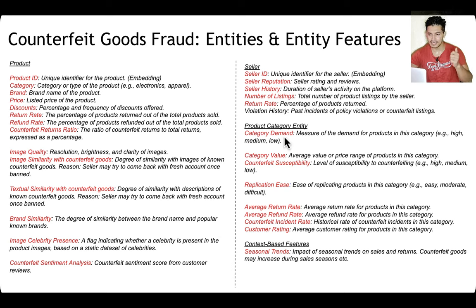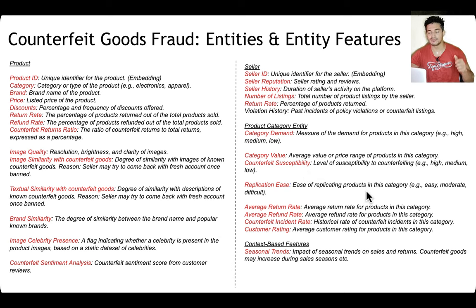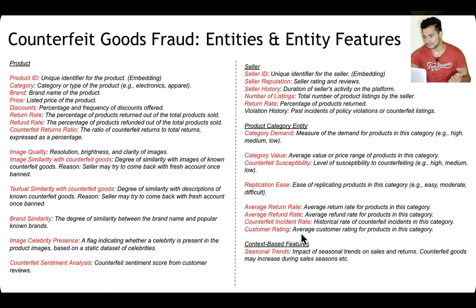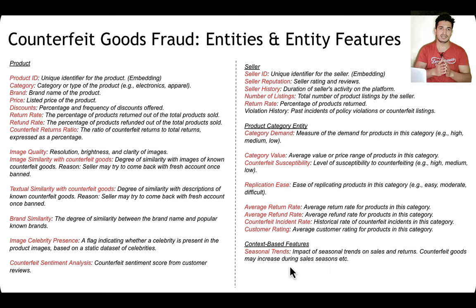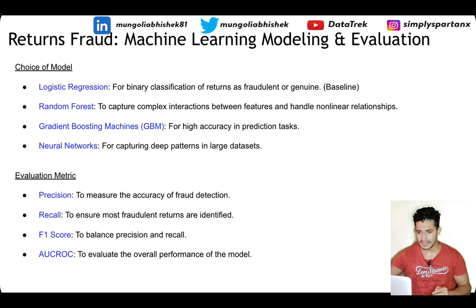Product category entity features include: category demand (high, medium, low), category value (average price range of products in the category), counterfeit susceptibility (high, medium, low), ease of replication (easy, moderate, difficult), average return rate, average refund rate, counterfeit incident rate (some categories have a high historical counterfeit rate), and average customer rating for products in the category. Context-based features include seasonal trend impact — counterfeit goods may increase during sales events, so seasonal flags help better explain the target variable of whether a product is counterfeit or not.